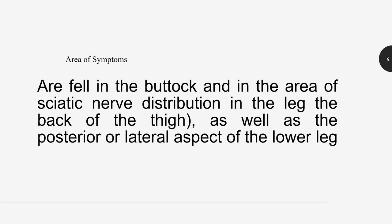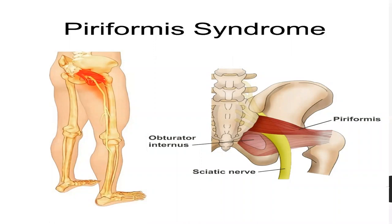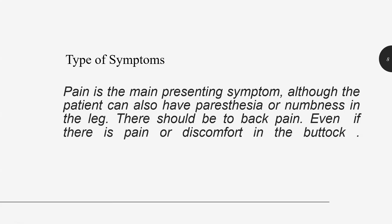Area of symptoms: generally, as seen in the video — buttocks, thigh region, calf area, and foot area — the lateral aspect of the lower leg. Pain: the patient will give you a history of pain in the buttock region, hip region, lateral thigh, lateral calf area, and foot. Pain is the main presenting symptom, although the patient can also have paresthesia or numbness in the leg. There should be no back pain even if there is discomfort in the buttock region.